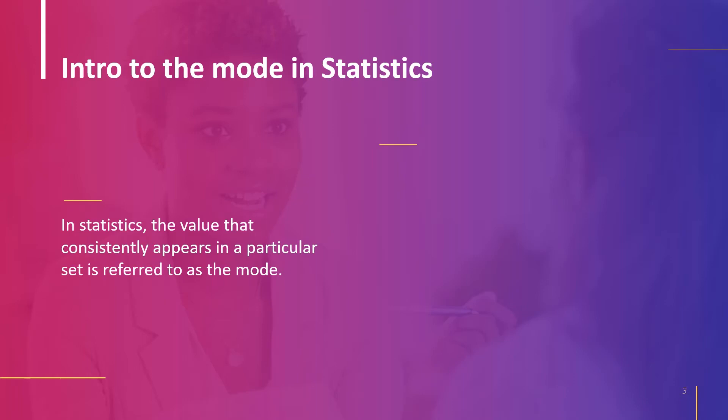The value that regularly occurs in a given set is known as the mode in statistics. The mode or modal value is the number that occurs most frequently in a data set and has a high frequency. It is among the three measures of central tendency along with mean and median. For instance, the set 4, 2, 6, 6, 8 has 6 as its mode because 6 appears twice and the rest appear only once. Therefore we can quickly determine the mode given a finite number of observations.